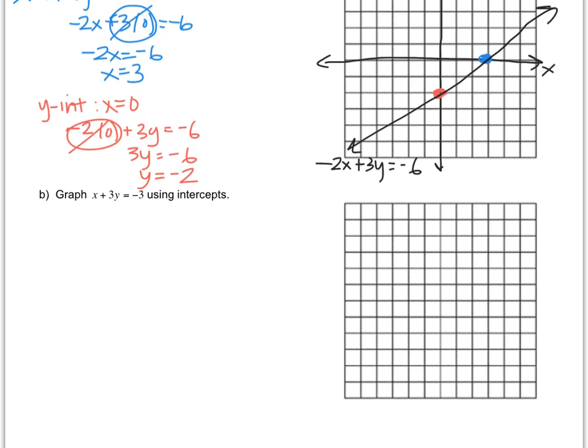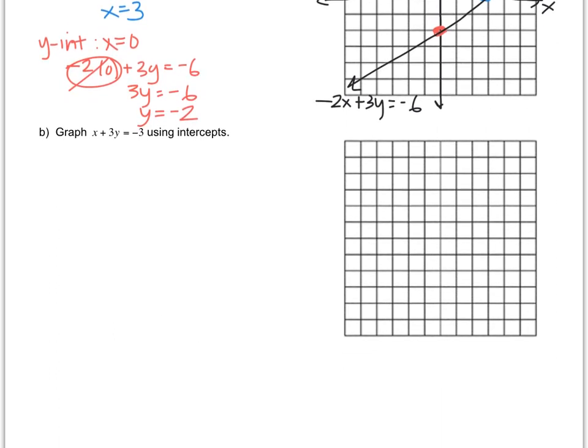Alright, let's do another one, example b. We're gonna find our x-intercept, which is when the y value is 0. Instead of y, I'm gonna put 0. So I have x plus 3 times 0 equals negative 3. This cancels because anything times 0 is 0. So you get x equals negative 3. Nice and simple, the x-intercept is at negative 3, 0.